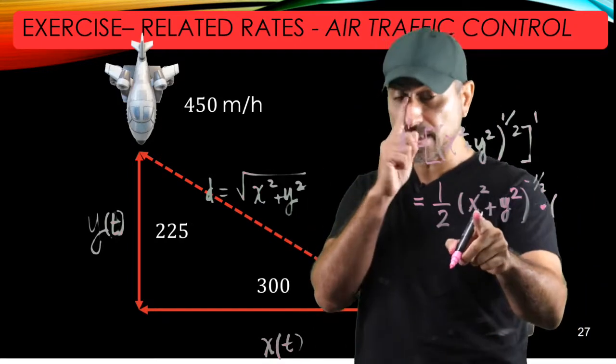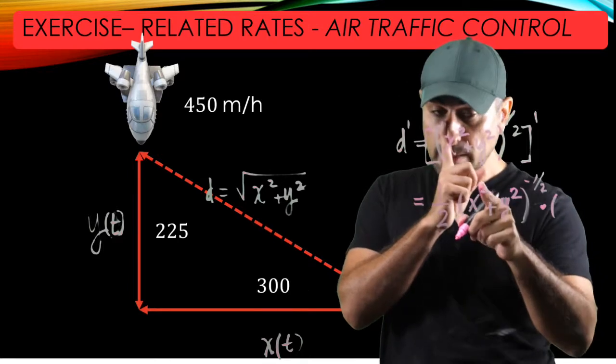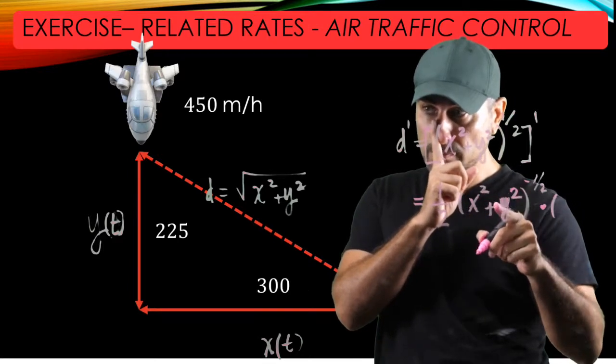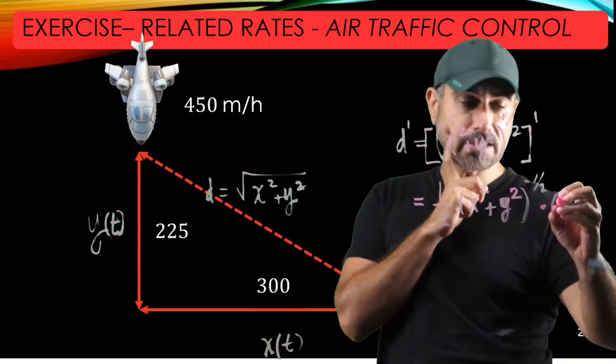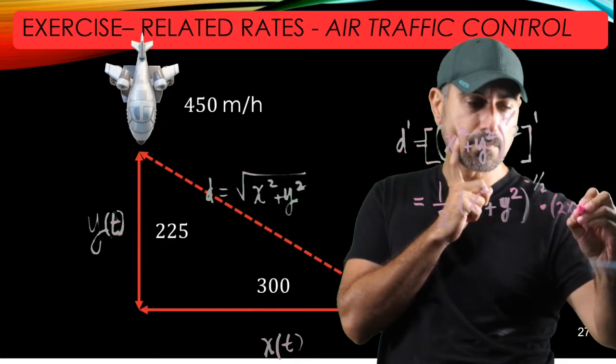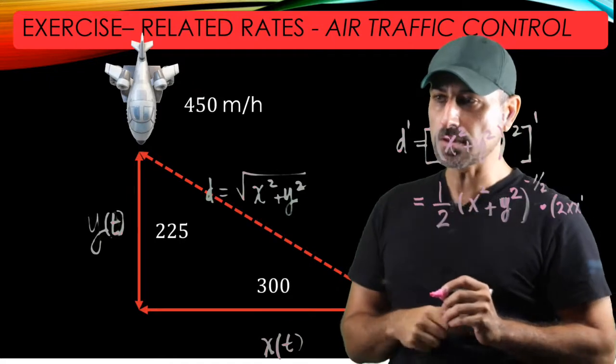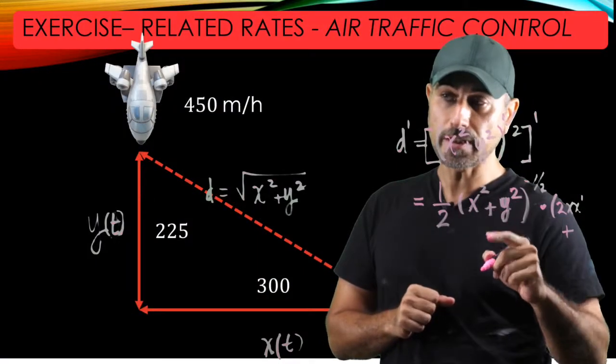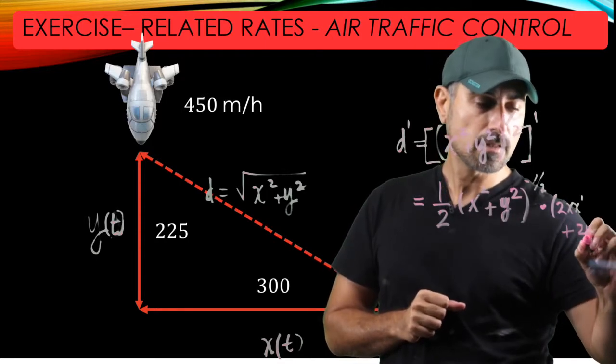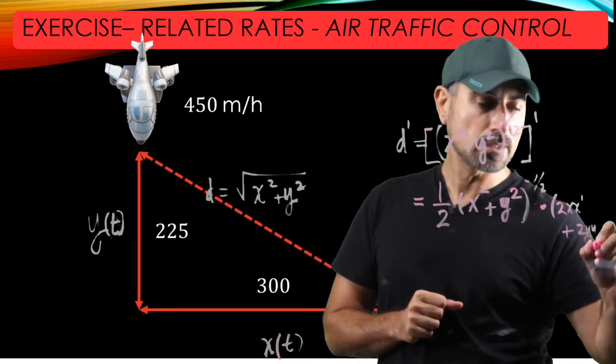The inner function is X squared plus Y squared, and we're going to apply the chain rule separately to those. So the derivative of X squared is 2X, but multiplied by X prime, since prime denotes the time derivative, plus the derivative of Y squared is 2Y multiplied by the derivative of Y.